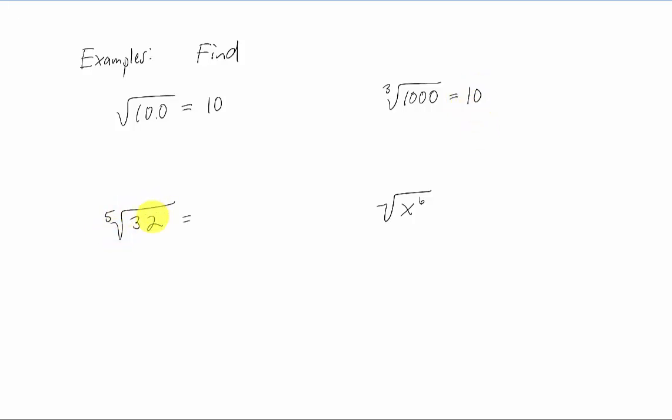If we want the fifth root of 32, you're asking the question, what number raised to the fifth power is 32? If you count it out, the answer is two. So the fifth root of 32 is two.